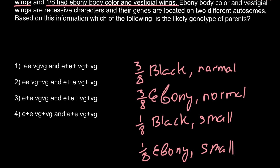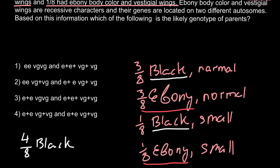Now let's group the traits. For body color: 3/8 black plus 1/8 black gives us 4/8 black, and 3/8 ebony plus 1/8 ebony gives us 4/8 ebony. In other words, 4/8 is 1/2, so we have a 1 to 1 ratio of black to ebony.